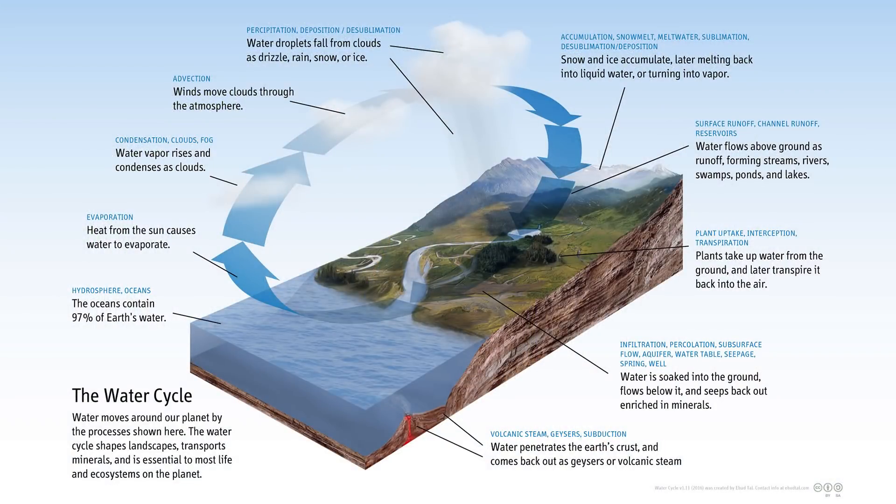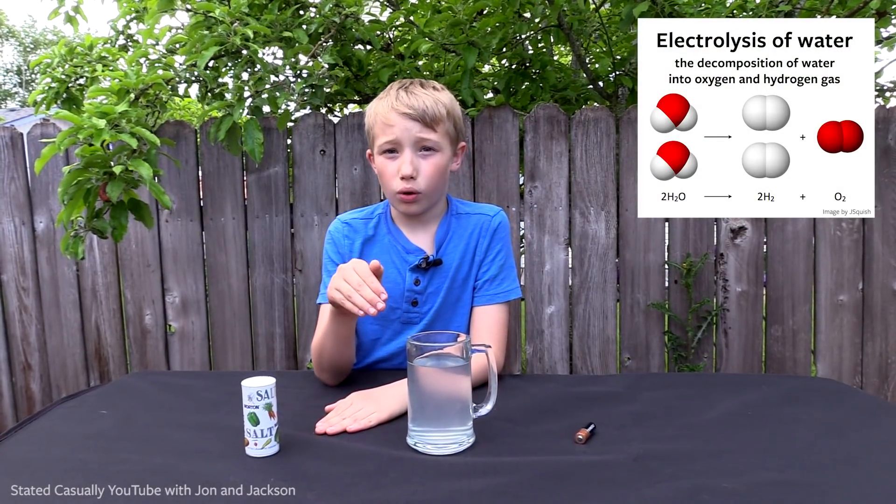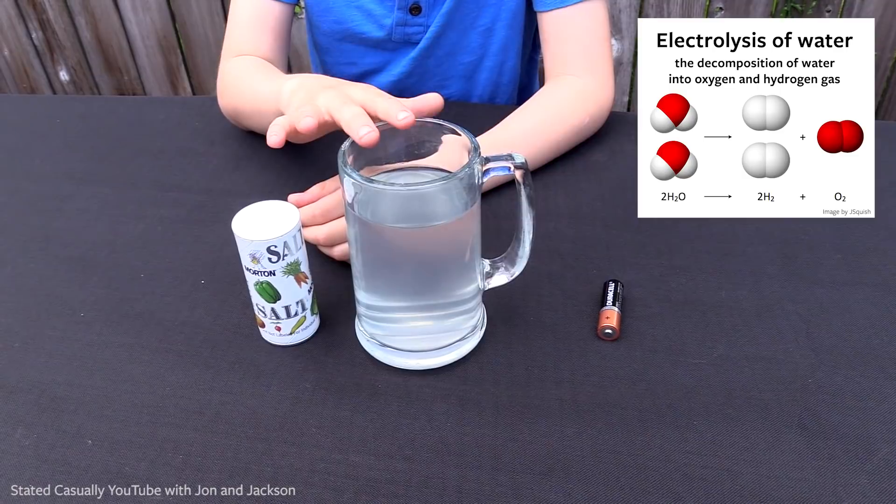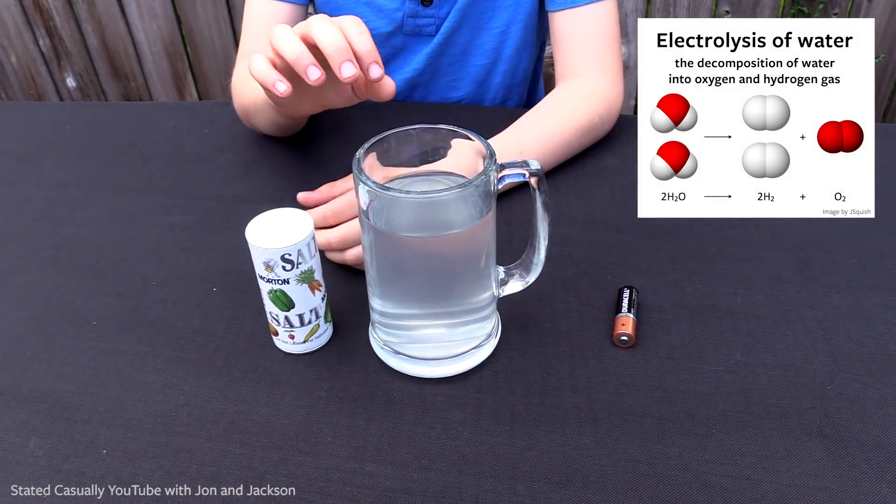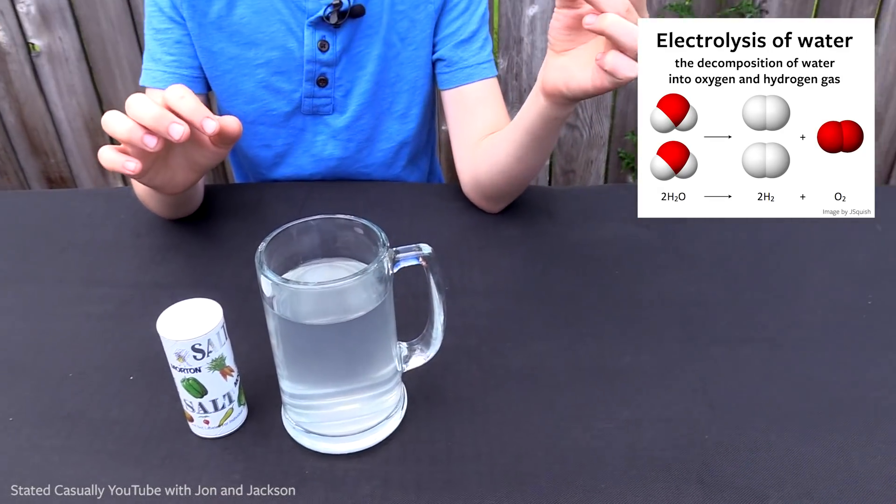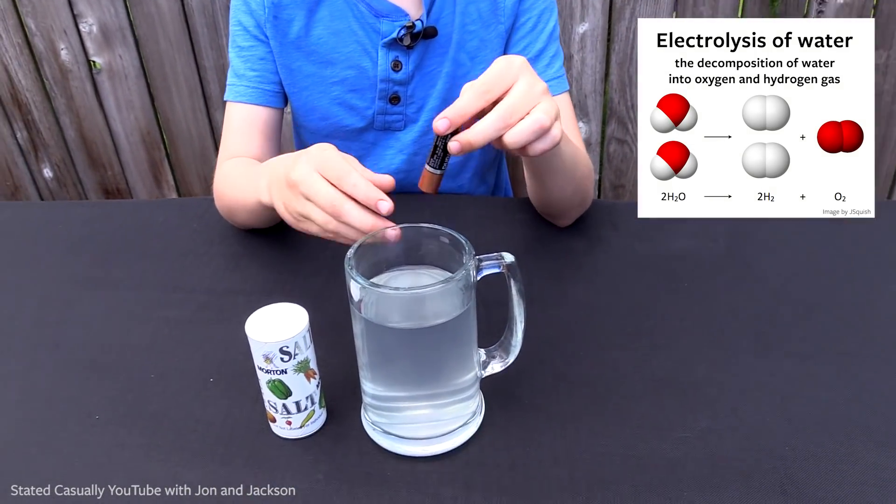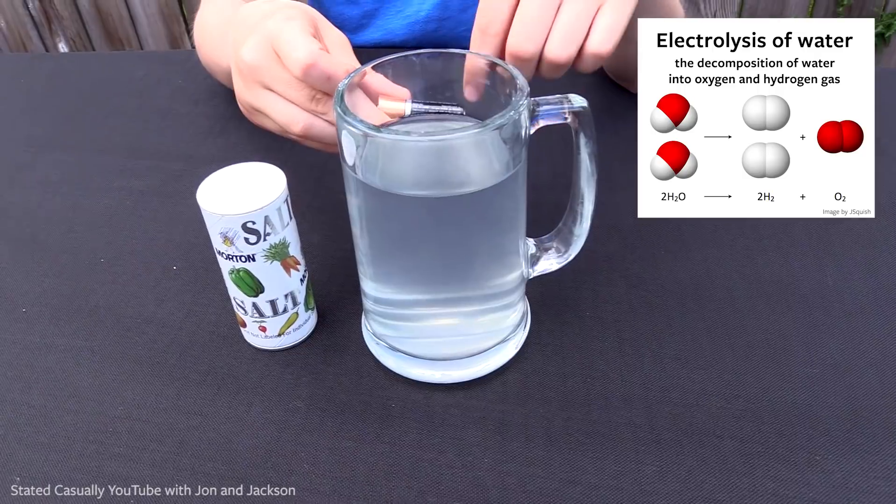Water, if it's heated up enough, will turn into water vapor. But nature can destroy water and recreate water. Here we have tap water, which had salt and water put in together, and a battery. Now, if I put the battery in, it will slowly start destroying the water.